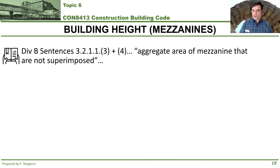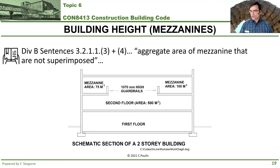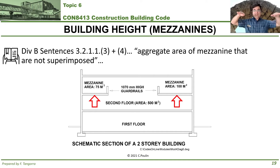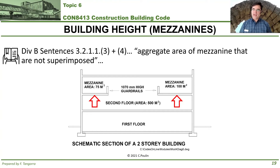Another thing to point out when reading sentences 3 and 4: the phrase 'aggregate area of the mezzanine that are not superimposed' is used. What that means is that sometimes you can have more than one mezzanine at the same level above a story — just like the second floor of the ACE building. When looking at the area of the mezzanine, you have to add all of the mezzanines at that same level. That's what is meant by aggregate area.